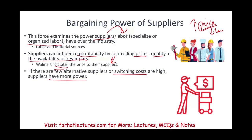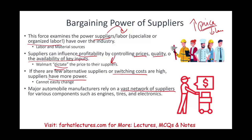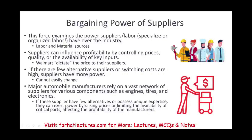Major automobile manufacturers rely on a vast network of suppliers for components such as engines, tires, and electronics. If those suppliers have few alternatives or possess unique expertise, they can exert power by raising prices or limiting availability of critical products, directly affecting the profitability of the manufacturers. That's why you have to understand who has the upper hand in your supplier relationships.